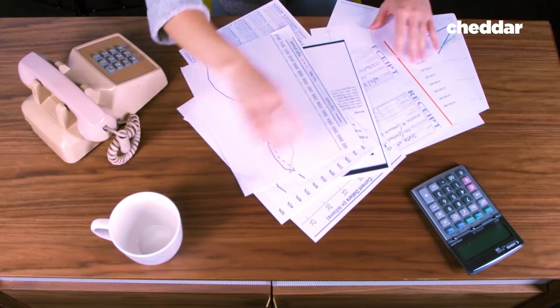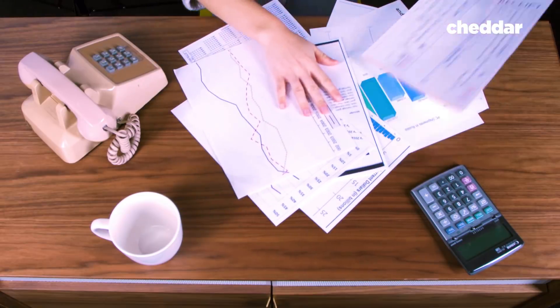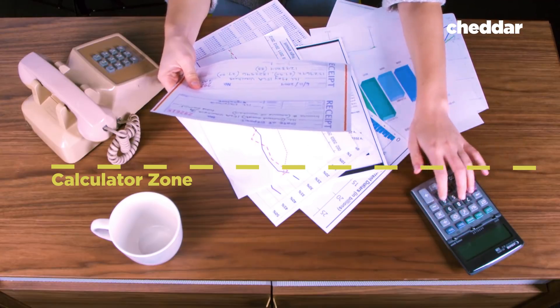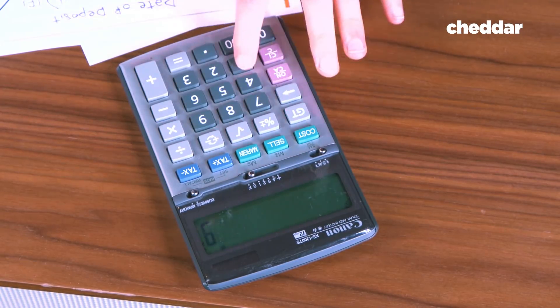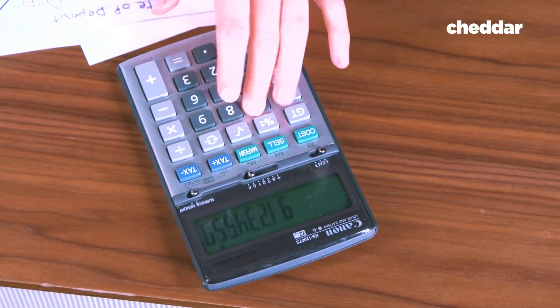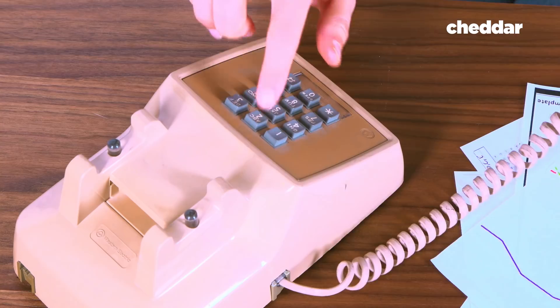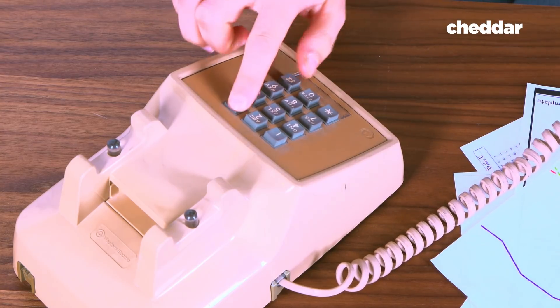Another theory was based on where your phone sat on your desk. Calculators often sat above your paperwork, making the most used 1 and 0 keys at the bottom of the keypad easiest to reach. But your phone sat off to the side and had the receiver on top, so it made sense to start the numbers directly below it.